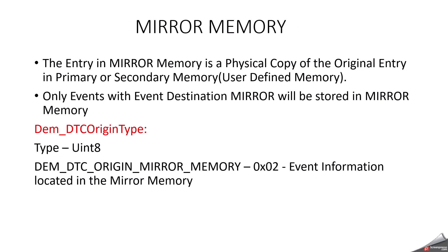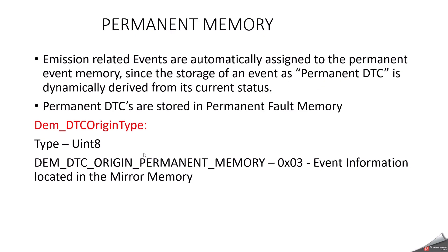Mirror Memory is rarely used in projects and is selected based on requirements. It is a physical copy of the original entry in primary or user defined (secondary) memory. Only events with event destination set to mirror will be stored in mirror memory. This is also selected via the DTC origin type — you select the enum DEM_DTC_ORIGIN_MIRROR_MEMORY with value 0x02. You must first decide whether mirror memory is needed for your project.